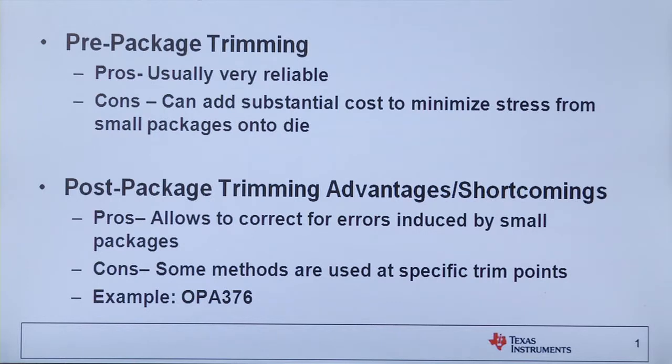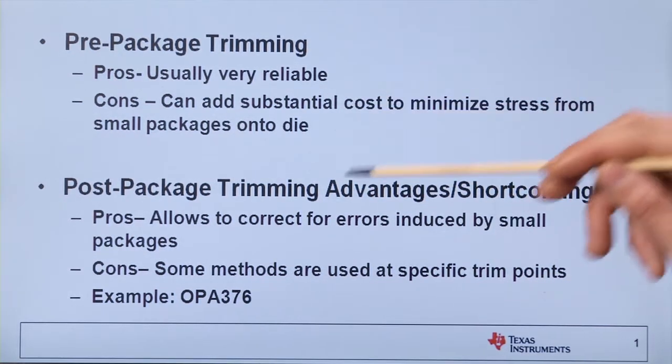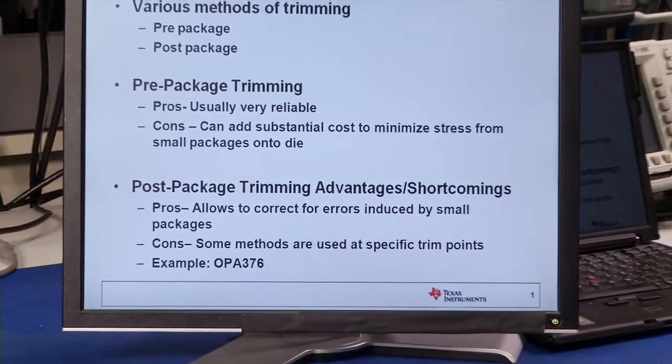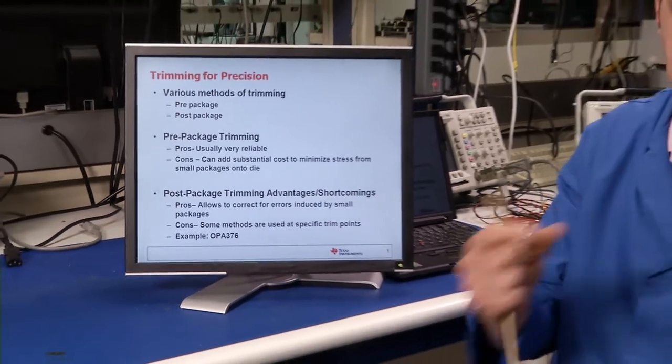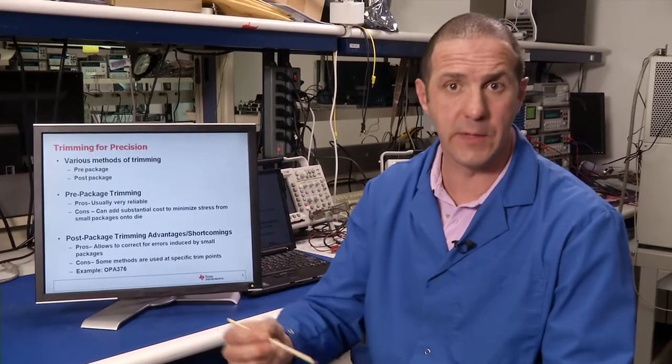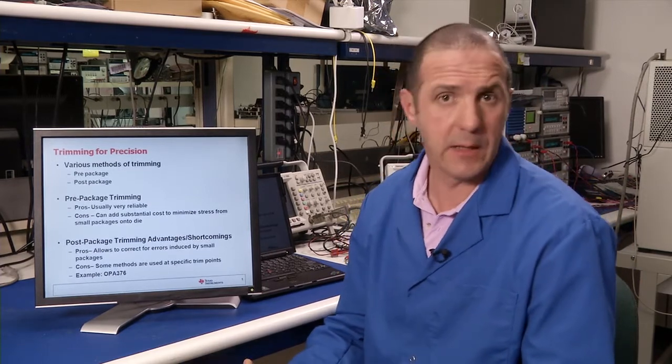We have come up with basically post-package trimming. TI has them, our competitors have them. However, these also offer some advantages and likewise some disadvantages. One of the advantages of the post-package trim method is that it basically eradicates the fact that you have induced the errors by using a small package. You can now use a very, very small package, much like the SC-70, the SA-23 or the micro SMD we mentioned earlier, and not have to deal with those errors in virtually just about any application that you can think of.